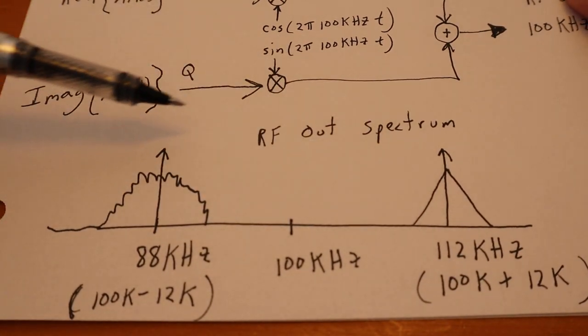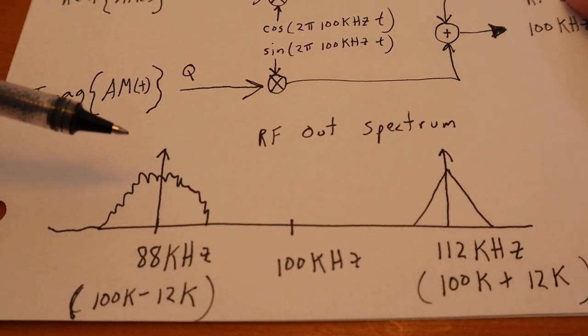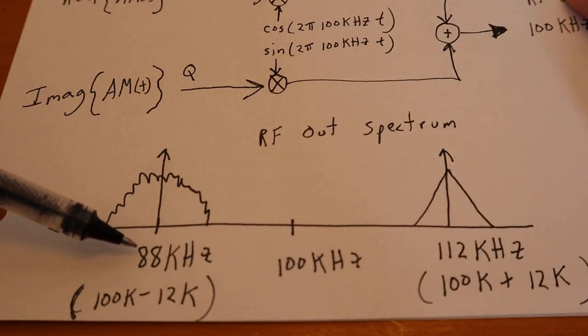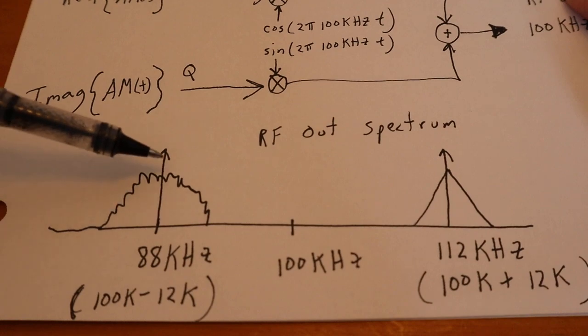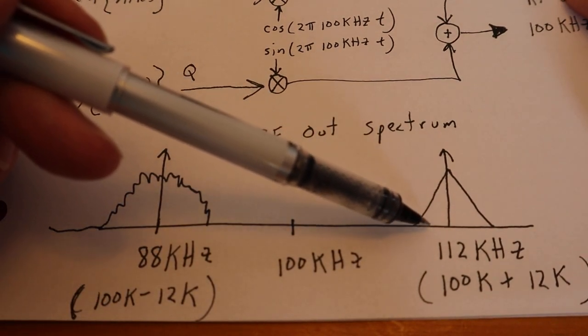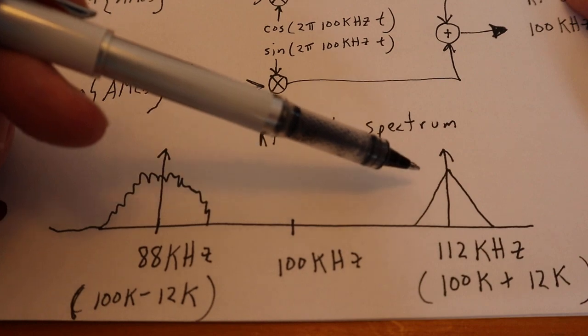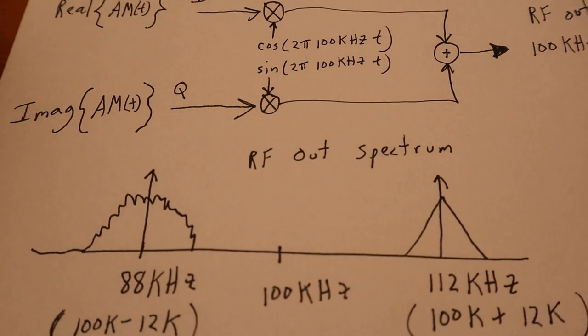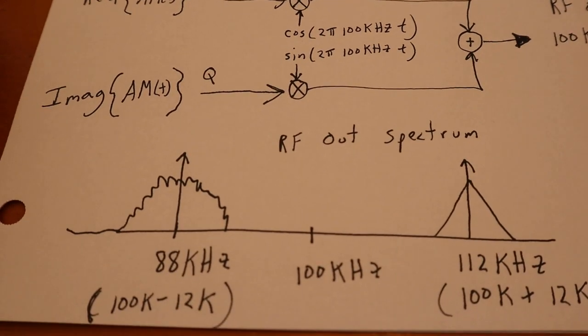So this now is how this signal comes out in the real world. So if you were to tune your radio to 88 kHz, you would hear the one AM waveform. If you were to tune your radio to 112 kHz, you would hear the second AM radio waveform.